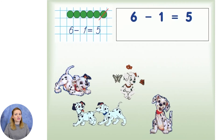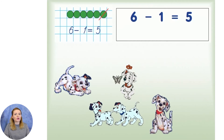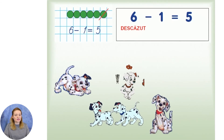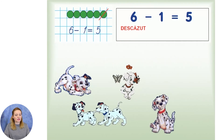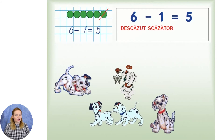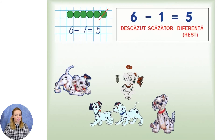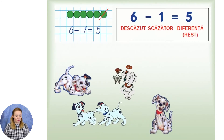Trebuie să știți că la scădere, ca și la adunare, fiecare număr are un nume. Primul număr din care se scade se numește descăzut. Al doilea număr pe care îl scădem se numește scăzător. Rezultatul scăderii se numește diferență sau rest. Deci cinci este diferența numerelor șase și unu.